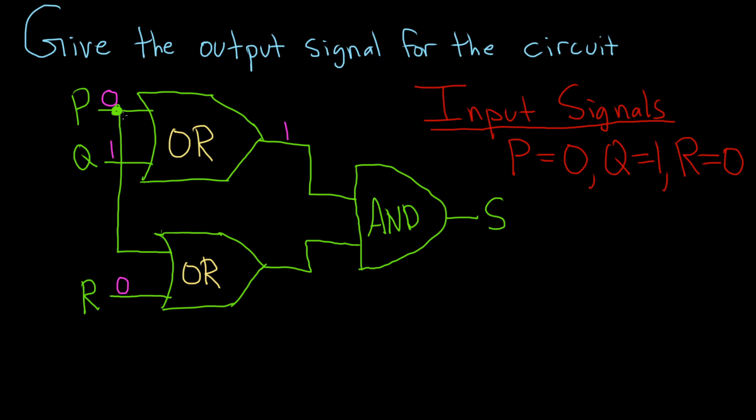Likewise here, we have P, which is 0. See how it comes down this way and it goes into the OR gate. I'm going to go ahead and put a 0 here again so you see it. So you have two 0s here entering the OR gate. That's going to give us a 0.